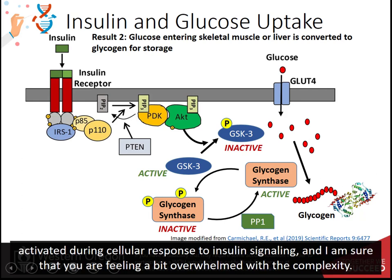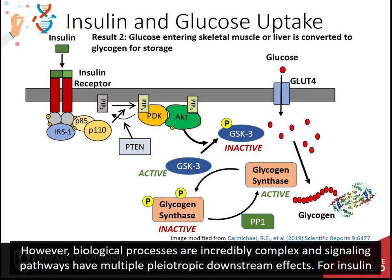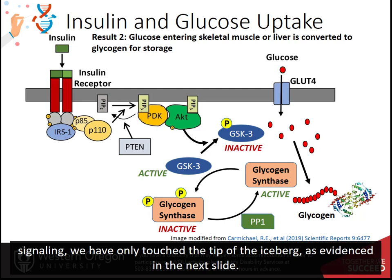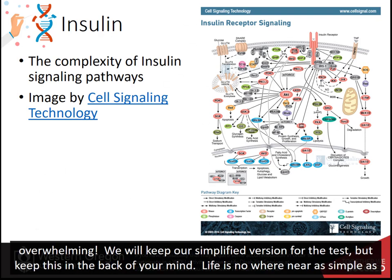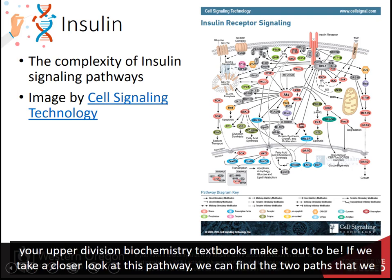We have just talked about two pathways activated during cellular response to insulin signaling, and biological processes are incredibly complex — signaling pathways have multiple pleiotropic downstream effects. For insulin signaling, we have only touched the tip of the iceberg, as evidenced by this more complete diagram of the insulin signaling pathway created by Cell Signaling Technology. We will keep our simplified version for the test, but keep this in the back of your mind — life is nowhere near as simple as your upper division biochemistry textbooks make it out to be. If we take a closer look at this pathway, we can find the two paths that we were looking at: first, the activation of PI3 kinase by the IRS protein, which then converts PIP2 to PIP3.